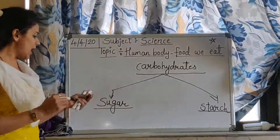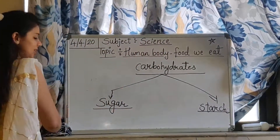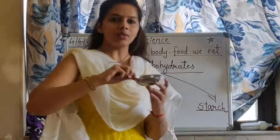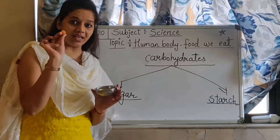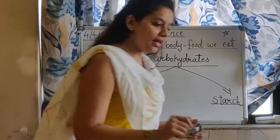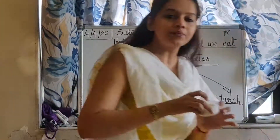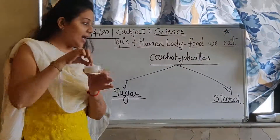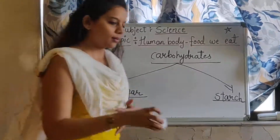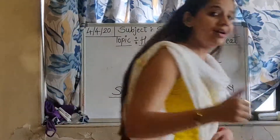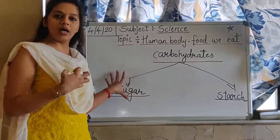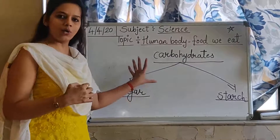Sugar carbohydrates we get from food. For example, jaggery — we get sugar carbohydrates from jaggery. Then the next is sugar. We get sugar carbohydrates from sugar and also from honey. If you consume honey, you will get sugar carbohydrates.